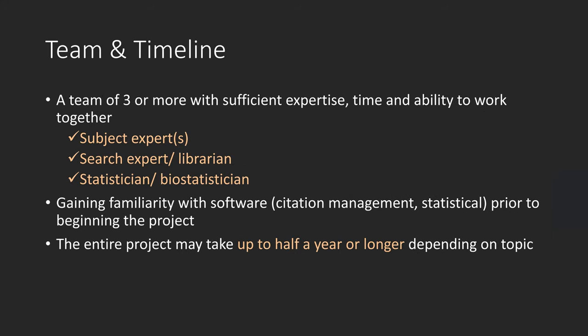Now let's move on to how to conduct a review. Conducting a rigorous review, especially a systematic review or scoping review, is not easy. Ideally, you would have to establish a team of three or more members: subject experts, a librarian, and a statistician if you plan to do meta-analysis. Before starting the project, get yourself familiar with citation management software and statistical software. As an entire project may take up to half a year or longer, it's important to think about the need for conducting a review, which type of review, whether it's feasible depending on staffing, time, and any other available resources.